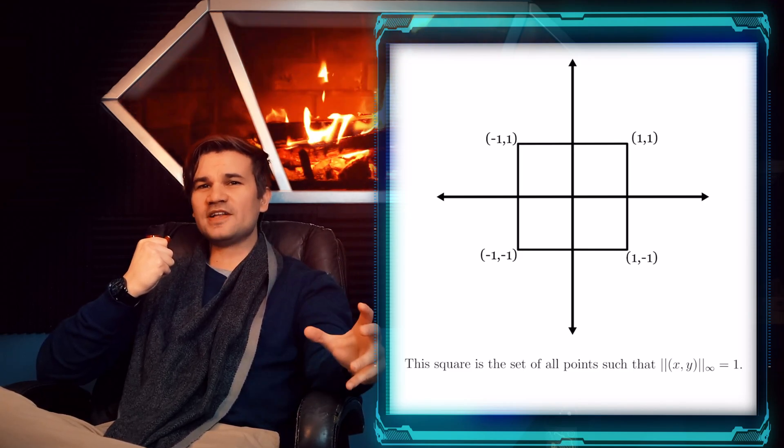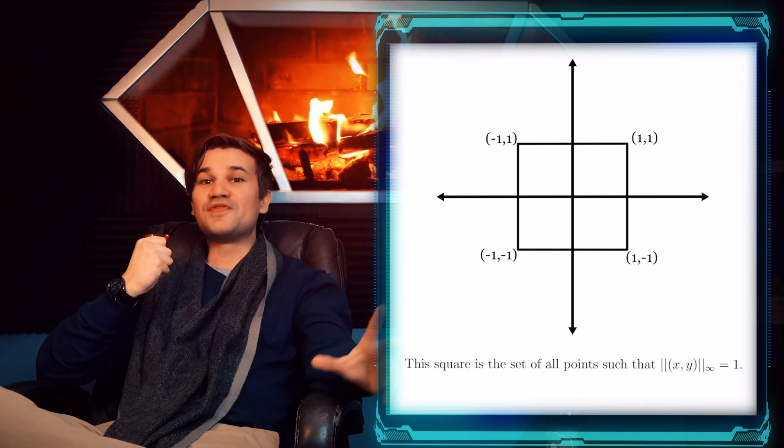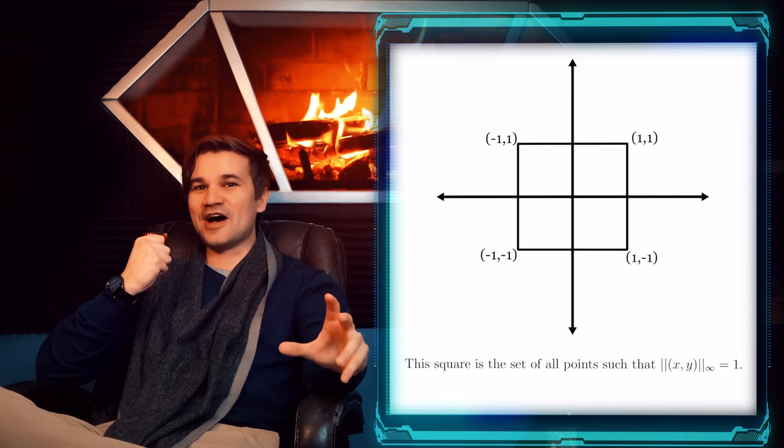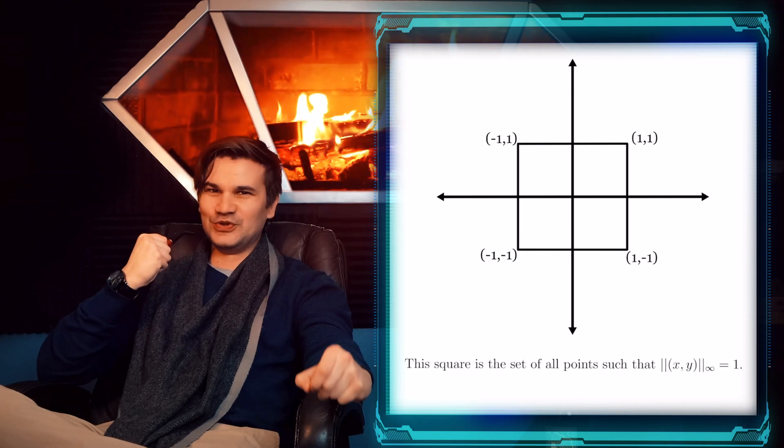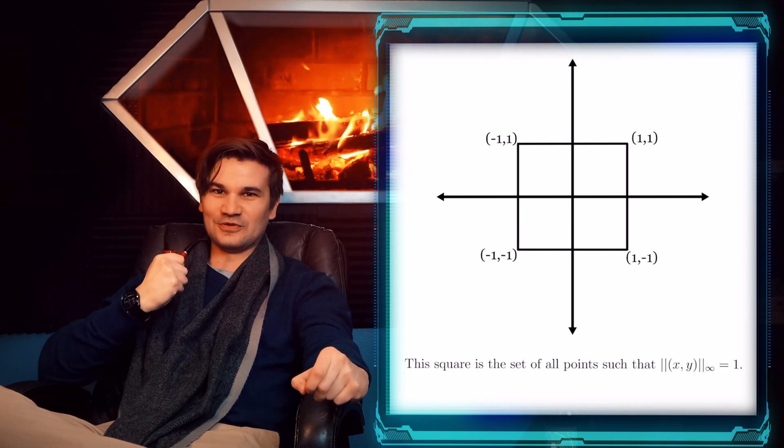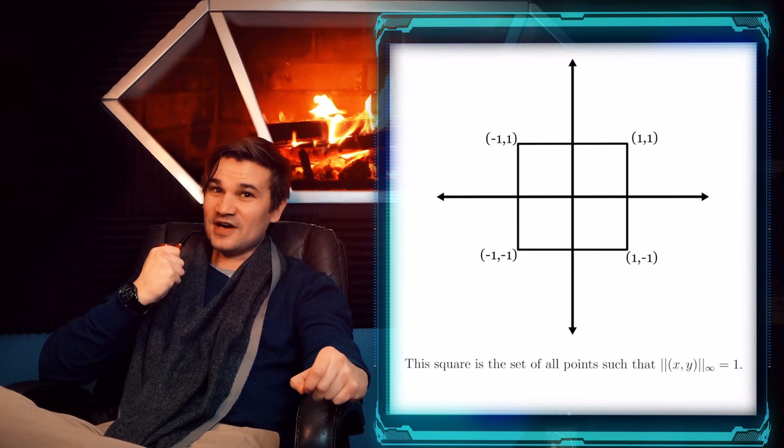we are looking at the points which have a coordinate of absolute value 1, with the other coordinate having an absolute value smaller than 1. Under this new norm, we are no longer generating circles. We are generating these squares.